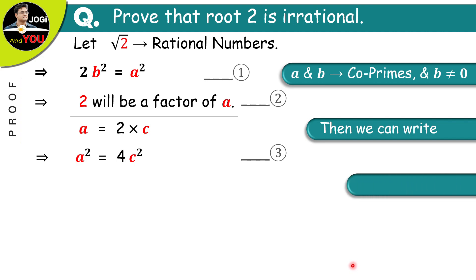Now, look at these two equations 1 and 3. One side of both the equations is a square. Then, of course, the other two sides will also be equal to each other. So, here we have 2b square is equal to 4c square.